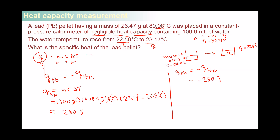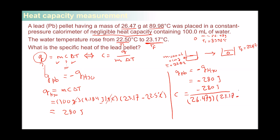Going back to the first formula and rearranging, the specific heat capacity equals Q divided by m·ΔT. We calculate C by taking −280 joules divided by the mass of the metal, 26.47 grams, times the change in temperature (23.17 − 89.98 degrees), giving a specific heat of 0.158 joules per gram per degree for lead.